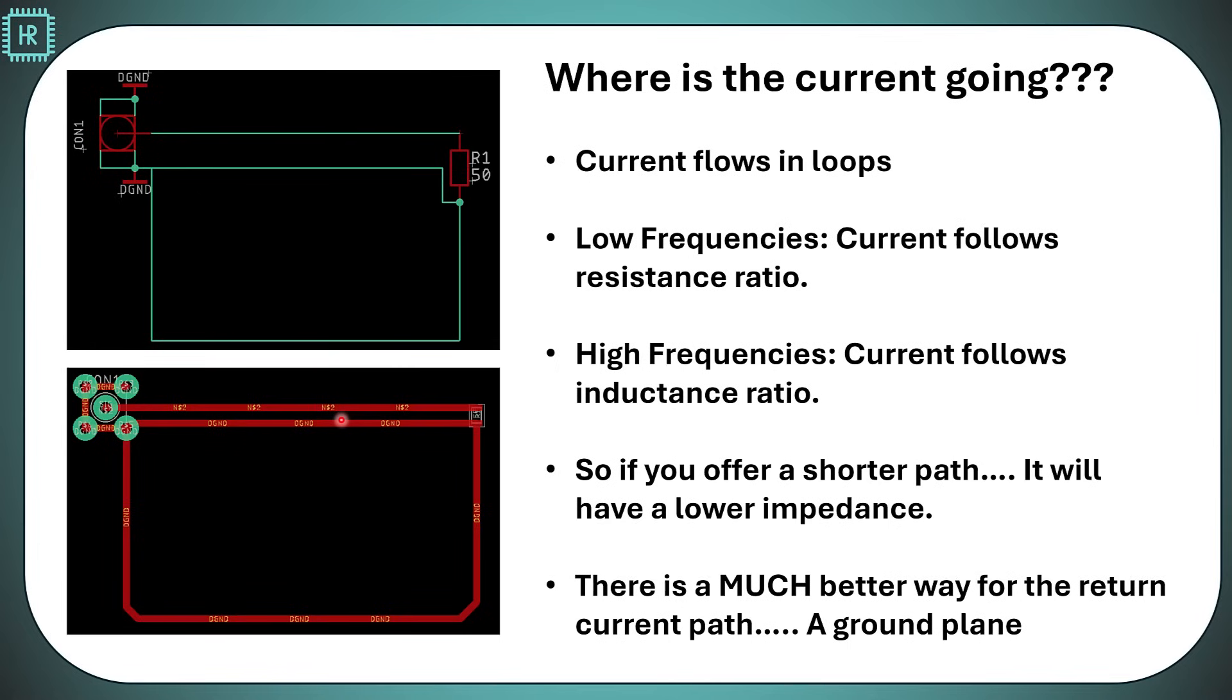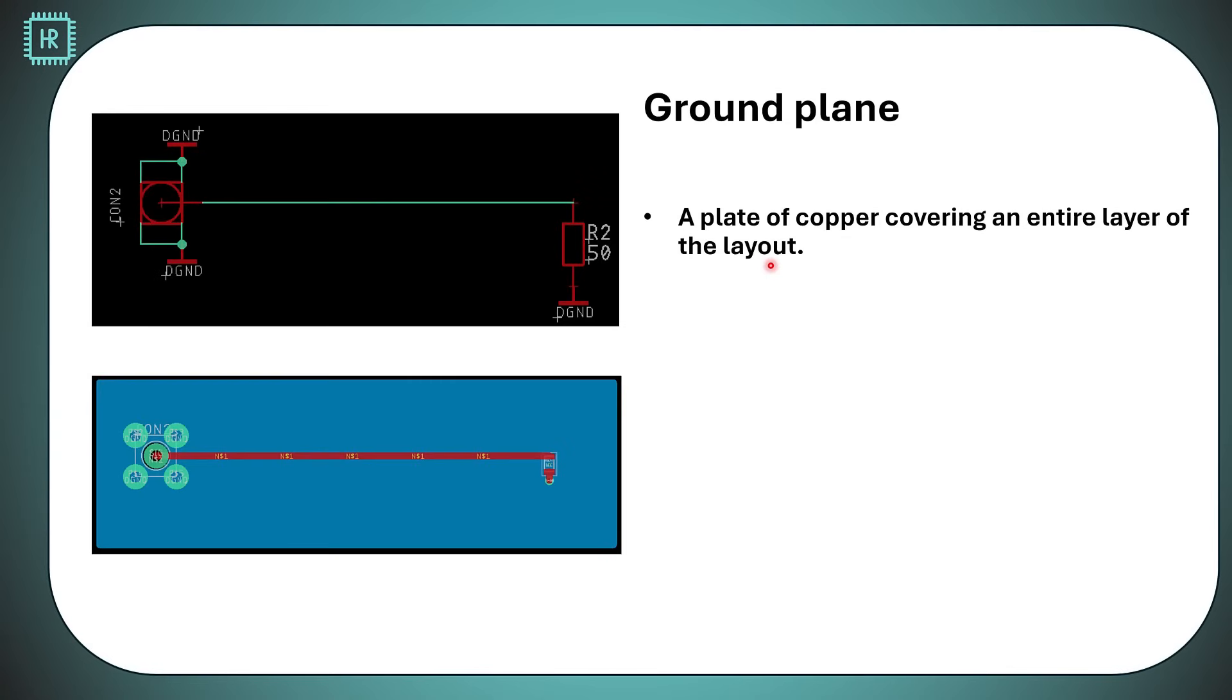There is a much better way for the return current and that is a ground plane. A ground plane is a plate of copper covering an entire layer of a board. On the left bottom, you can see it here. The blue layer is the bottom layer of the board. The red layer is the top layer. The entire surface area of the board of the bottom layer is used to make a copper plane. On the schematic, you see that we use ground symbols now. The basic advantage is ground is now everywhere available on your board. You just place a via and you can connect to the ground. The advantage is that you always have the shortest path available to ground.